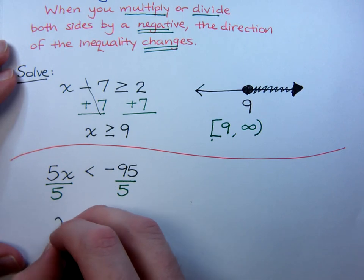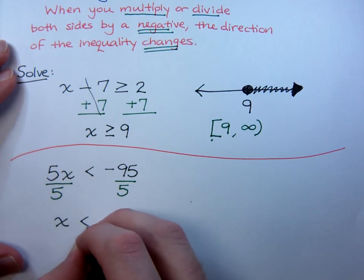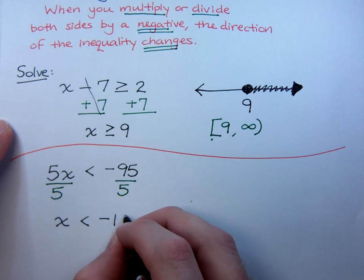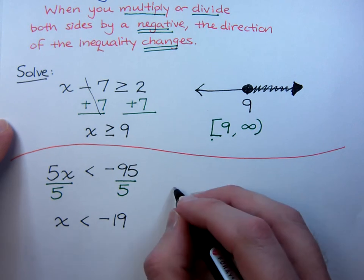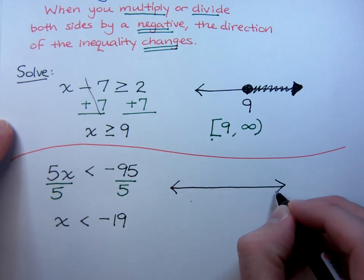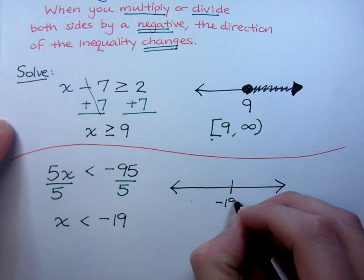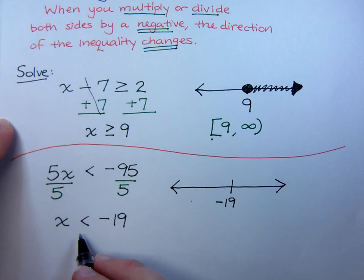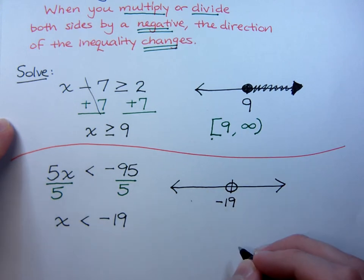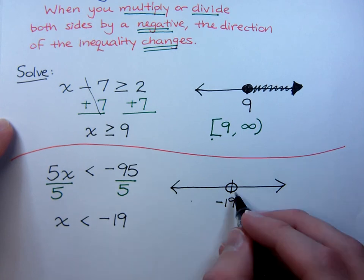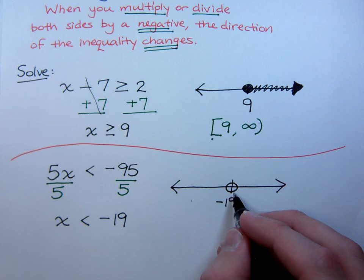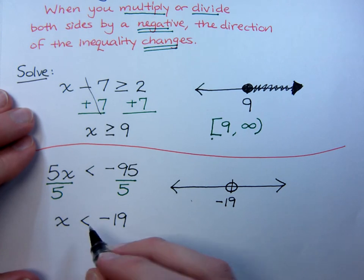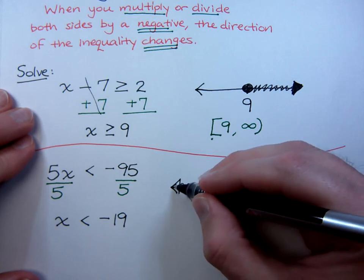So, the inequality symbol does not change directions. I have just x is less than, and then you just do the math. Negative 95 divided by 5 is going to give you a negative 19. So, let's look and see what that guy looks like if I were to graph him. So, here is negative 19. Will my circle here be open or closed? Well, since I'm less than, but not equal to, this will be an open circle. Since I'm less than, which way will I shade? Well, think about it this way. Less than is going to be to the left. Less than left. And look, when you have x on the left side, you see how it's pointing. This guy is pointing to the left.